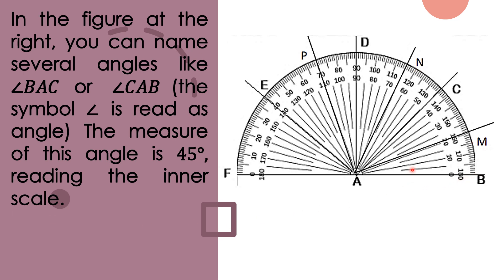So angle BAC has the measure of 45 degrees using the inner scale because this is where we placed the zero or first line or ray. Since line C or side C lies between 40 and 50, that is 45 degrees.